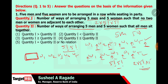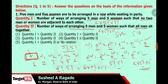We now have 6 positions: 1, 2, 3, 4, 5, 6 — treating the box as a single position. These 6 entities (5 women and 1 box) can be arranged in 6! ways, and inside the box we arrange 5 men in 5! ways. So quantity 2 = 6! × 5! = 6 × 5! × 5!. Since quantity 1 = 2 × 5! × 5! and quantity 2 = 6 × 5! × 5!, quantity 1 is less than quantity 2.